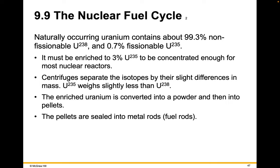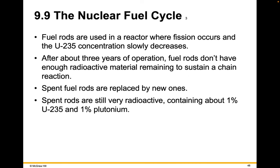Naturally occurring uranium contains about 99.3% non-fissionable U-238 and 0.7% fissionable U-235. It must be enriched to 3% to be concentrated enough for most nuclear reactors. Centrifuges separate the isotopes by slight differences in their mass — U-235 weighs slightly less than U-238. The enriched uranium is converted into a powder and then into pellets, and the pellets are sealed into metal rods. The fuel rods are used in a reactor where fission occurs and U-235 concentration slowly decreases. After about three years of operation, the fuel rods don't have enough radioactive material remaining to sustain a chain reaction, and the spent fuel rods are replaced by new ones.